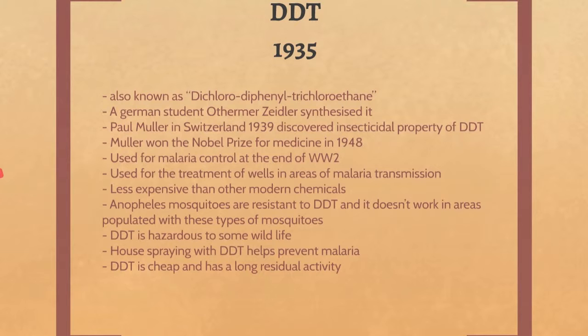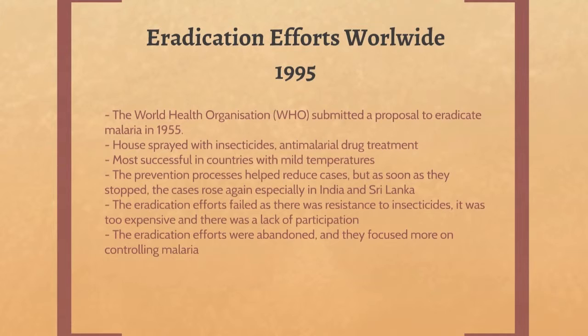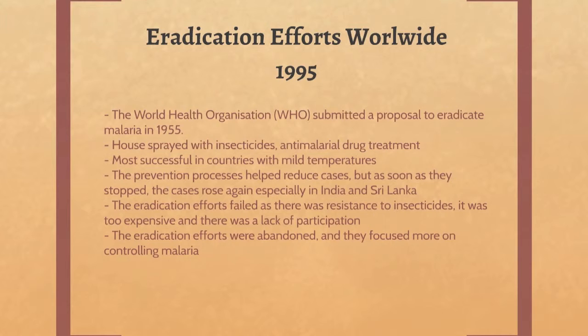Dichlorodiphenyl trichloroethane (DDT) has been used for the prevention and control of malaria since 1939. DDT can be sprayed in houses and wells to prevent further transmission. It is cheaper than other chemicals; however, it is hazardous to wildlife, sparking moral debates about its use. In 1995, the World Health Organization proposed total eradication of malaria worldwide. Successes included house sprays and anti-malarial medications that reduced cases, while failures included spikes in malaria cases where control was not maintained, along with a lack of funding and participation.